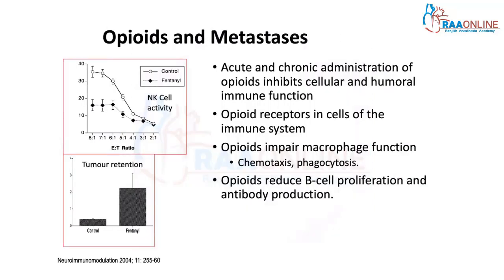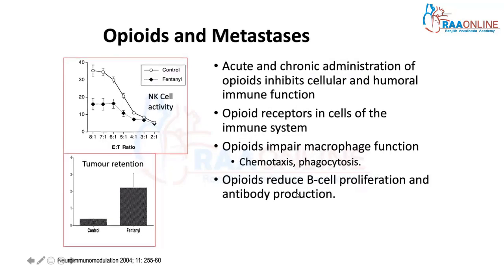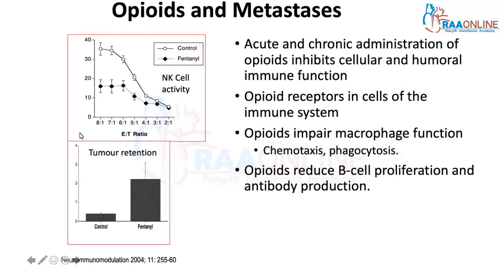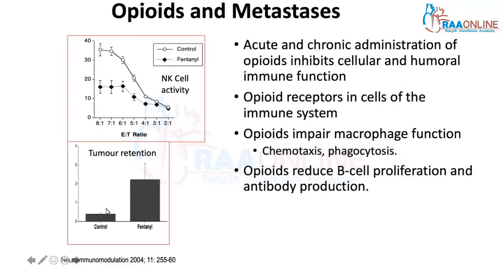Opioids are very commonly used in anesthetic practice, but it has been shown that opioids are actually immunosuppressive. Both acute and chronic administration of opioids inhibits cellular and humoral immune function and NK cell activity. Opioids impair macrophage function, reduce B cell proliferation and antibody formation. NK cell activity is inhibited by fentanyl, and tumor retention is much higher with fentanyl than in control animals.